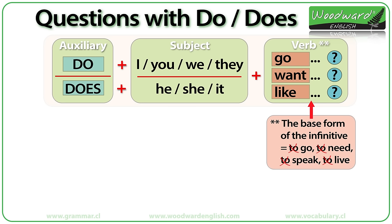But what comes AFTER the subject? We have the verb. It is important to note that the verb is in the base form of the infinitive. The infinitive is the original form of the verb before it is conjugated or changed. In English, the infinitive is TO GO, TO WANT, TO LIKE. For questions, we want the base form of the infinitive — TO GO, TO SPEAK, TO LIVE — but without the TO.